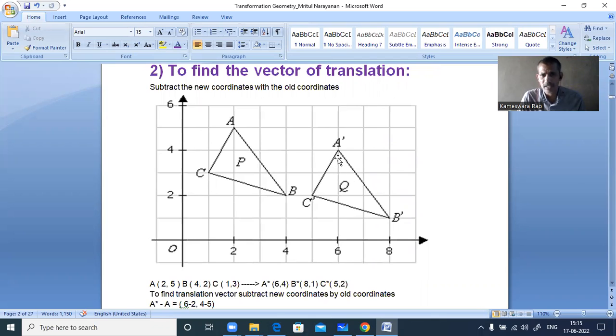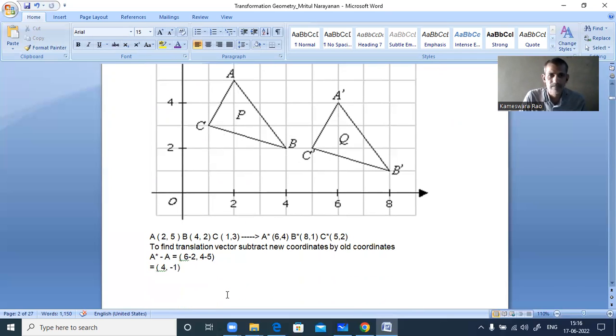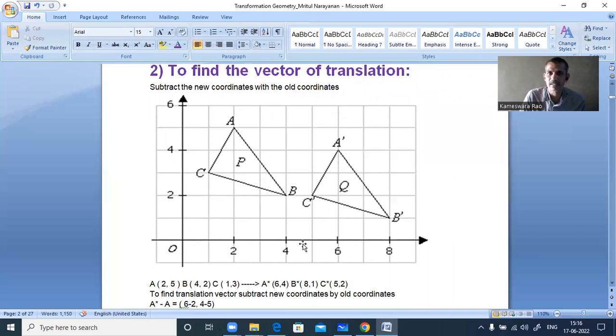Any one you take. A dash you take. What are the coordinates of A dash? 6 comma 4. From 6 comma 4 you have to subtract A. What are the coordinates of A? 2 comma 5. From 6 you have to subtract 2, 6 minus 2. From 4 you have to subtract 5, 4 minus 5. So what you are going to get? 4 comma minus 1 is the translation vector.